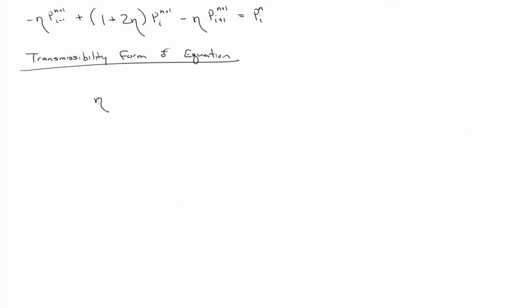Remember, eta, and of course eta is dimensionless. It has to be. Eta is alpha delta t over delta x squared. And remember, alpha is k over mu phi ct.